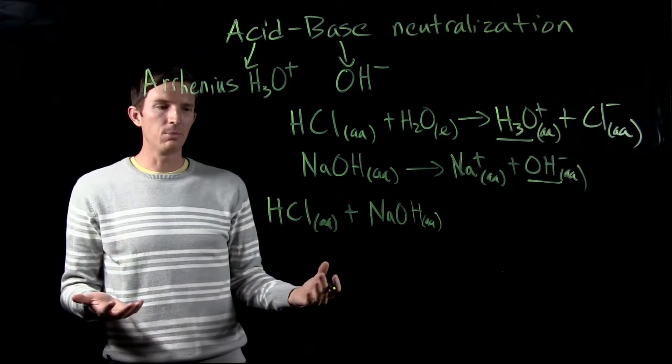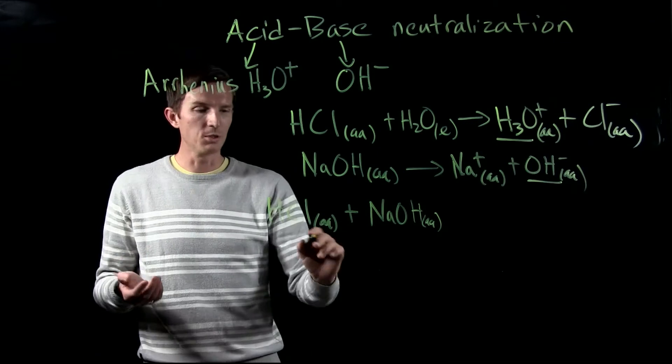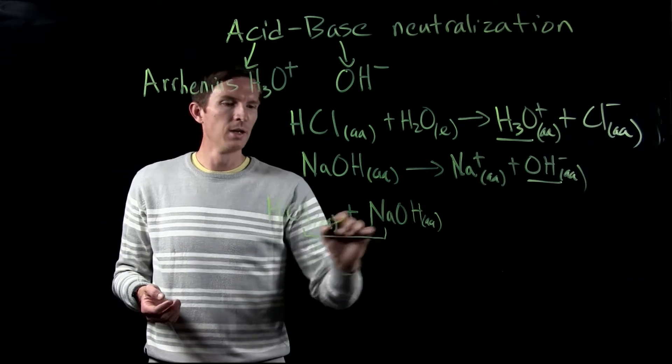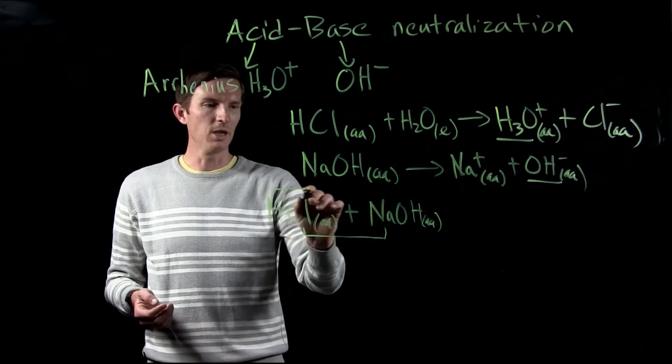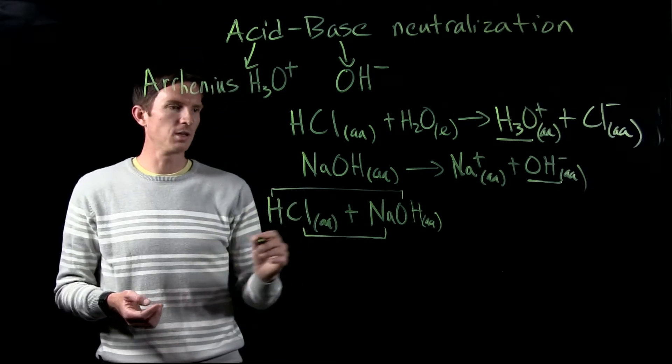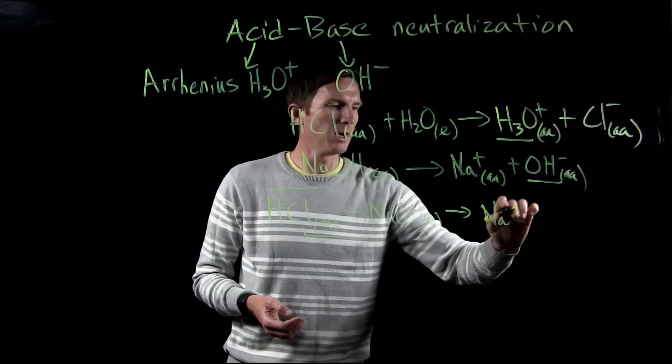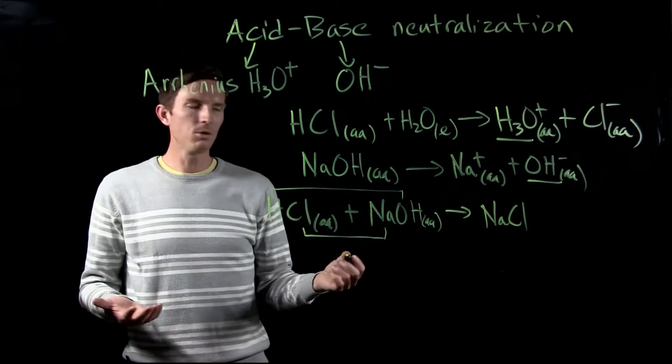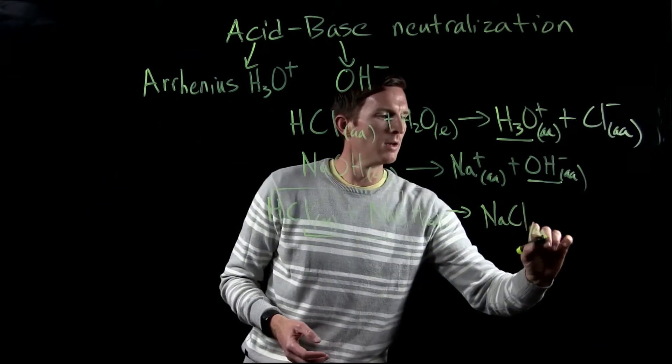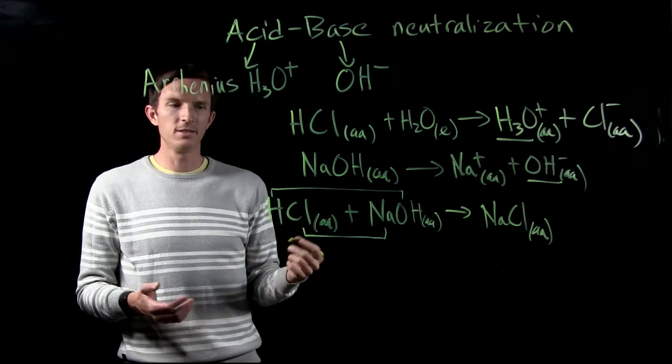So this is just like our other examples of a double replacement reaction. We're going to switch ion partners. So chlorine combines with sodium, H plus combines with hydroxide. Well when we have sodium combining with our chlorine, we get sodium chloride, which we would see is soluble, so we classify that as aqueous.